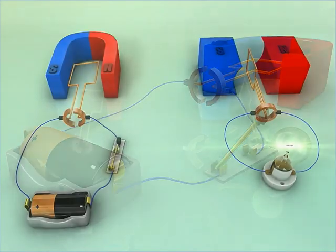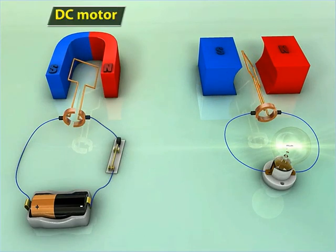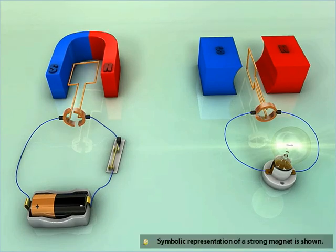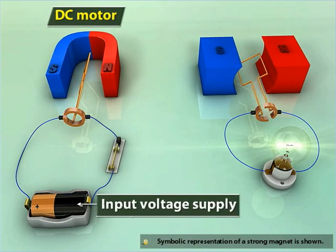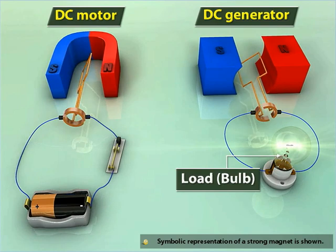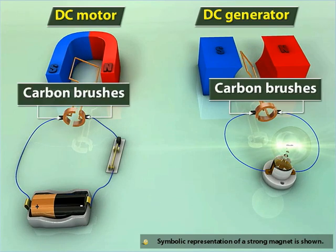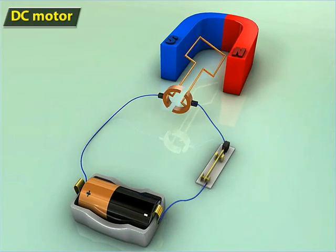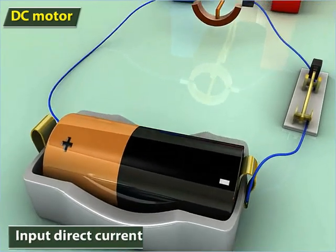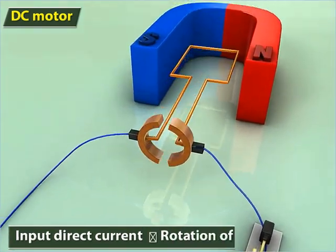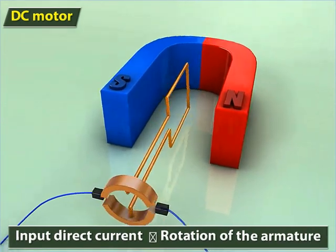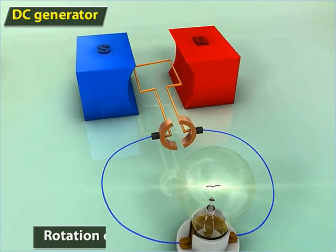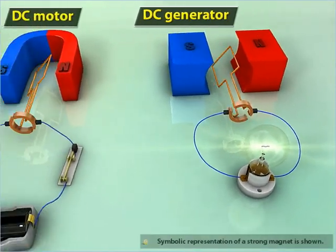Now, let us compare the construction and working of a DC motor to that of a DC generator. A DC motor has an input voltage supply, whereas a DC generator has a load like a bulb connected to the carbon brushes. In the case of a DC motor, an input direct current causes the rotation of the armature, whereas in the case of a DC generator, the rotation of the armature results in a DC voltage across the load.